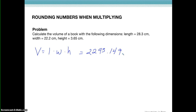Our answer can't have any more than three sig figs, otherwise it is more precise than the measurements that we started out with. You can't have an answer that's more precise than the measurements you were using to get it. So we need to round this number to have three sig figs, and there are basically three ways that we can do it.